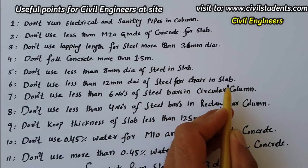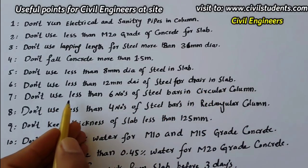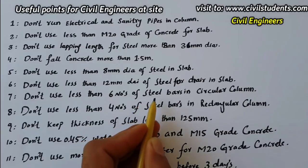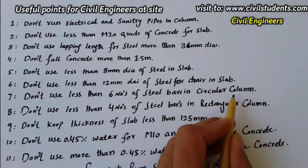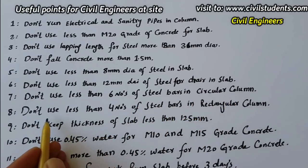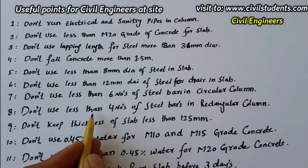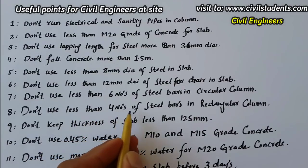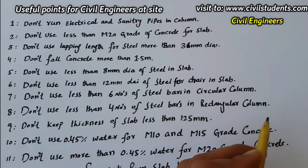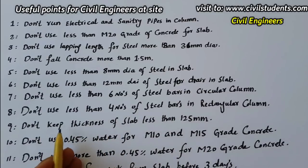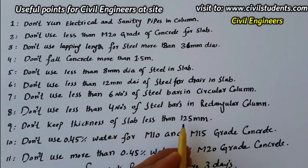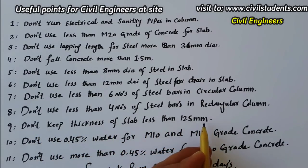Don't use less than 12mm diameter of steel for chairs in a slab. Don't use less than 6 numbers of steel bars in a circular column. Also don't use less than 4 numbers of steel bars in a rectangular column. And don't keep the thickness of the slab less than 125mm.